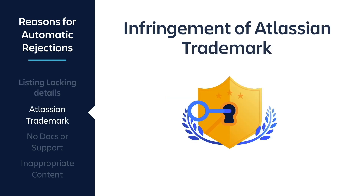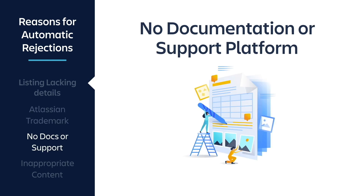The next reason for rejection is infringement of Atlassian trademark. We have branding guidelines you need to adhere to — for example, you can't use our logos as your app logo, and you must follow proper naming conventions. You can learn more about these branding guidelines from the link provided in the description. Another reason is providing no documentation or support platform. These are important as this is how customers can learn more about your app, give feedback, recommend new features, or reach out to you if any issue arises.